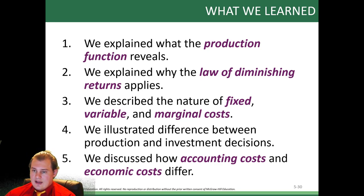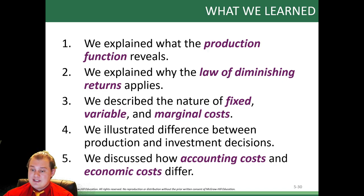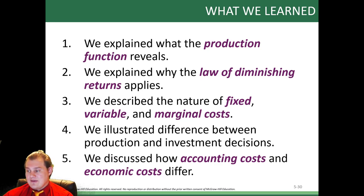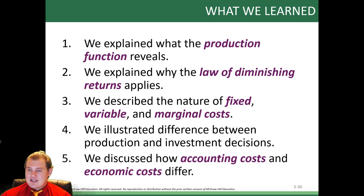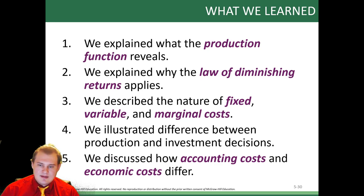In summary, we looked at production functions, the law of diminishing returns, fixed versus variable and marginal costs, and the difference between investment decisions — which are long-run — and production decisions — which are short-run. We also discussed accounting costs, which are explicit and can be recorded, versus economic costs, which include implicit costs like opportunity costs. Going back to the people running their diner struggling versus just becoming chefs somewhere else. Hopefully this makes sense. Keep chugging through economics. If you have any questions or comments, put them in the comments below or message me.